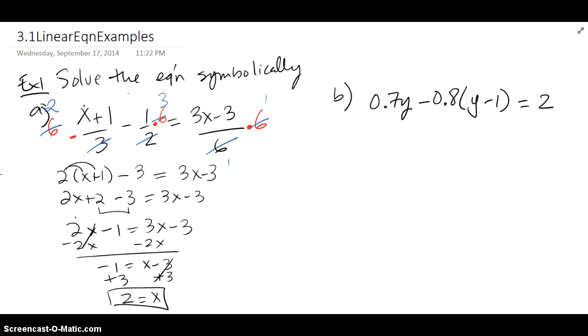The second one, part B, has decimals. And while you can choose to work with the decimals, I suggest that you eliminate them. You'll make less mistakes that way probably. Since there's one decimal place here and one decimal place here, I just look at these two and I think if I multiply them by 10, the decimal will move over 1 and I won't have to deal with it anymore.